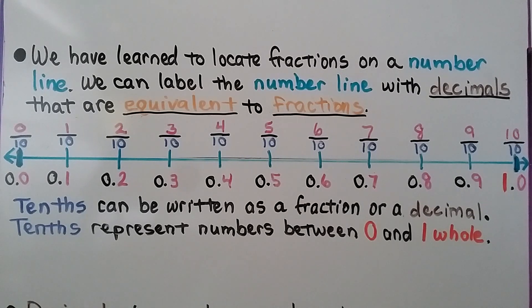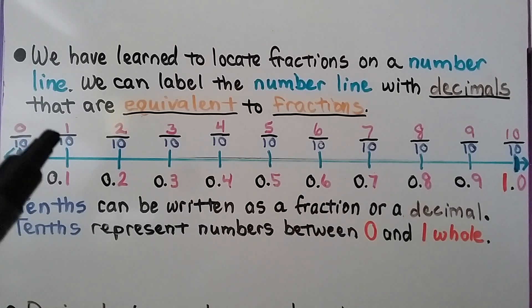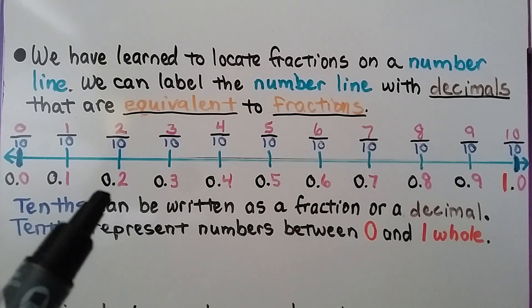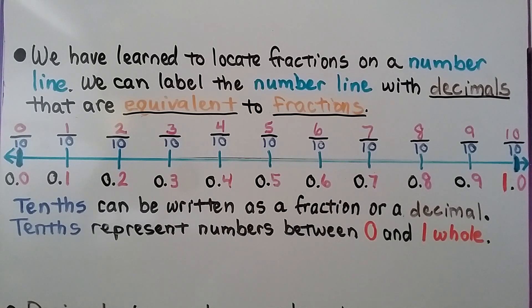We have learned to locate fractions on a number line. We can label the number line with decimals that are equivalent to fractions. Our number line starts at zero-tenths and goes up to one whole as ten-tenths, with each tenth written as both a fraction and a decimal. Tenths represent numbers between zero and one whole.